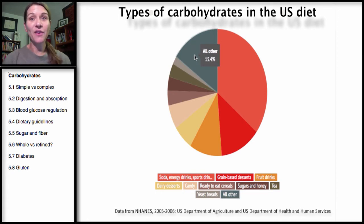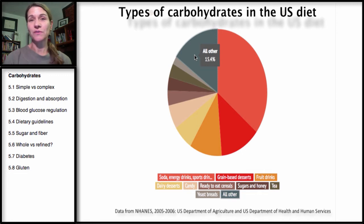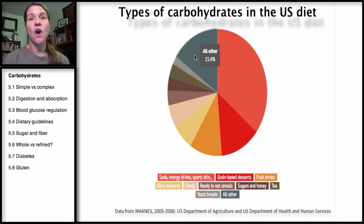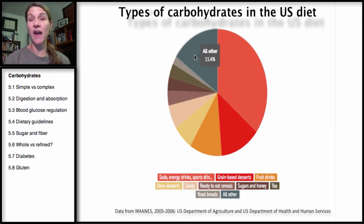So what's in the other category? We have fruits, vegetables — what about things like wild rice or legumes? So there are a lot of carbohydrates that are whole foods that are in a very small category compared to a lot of these refined and processed grains.